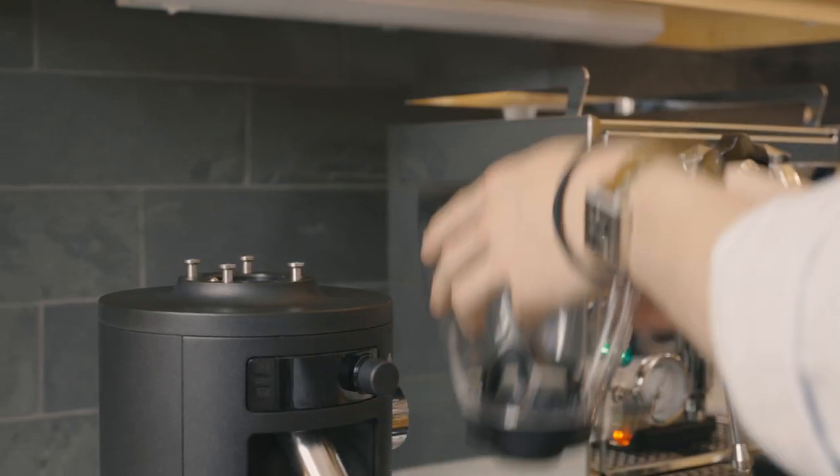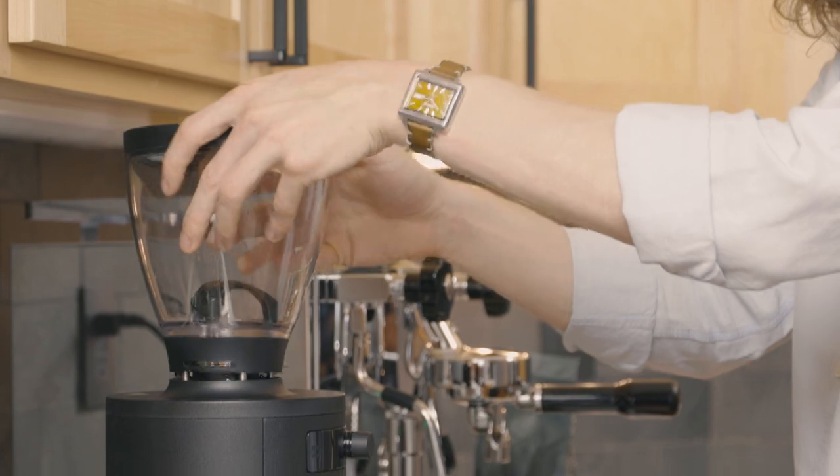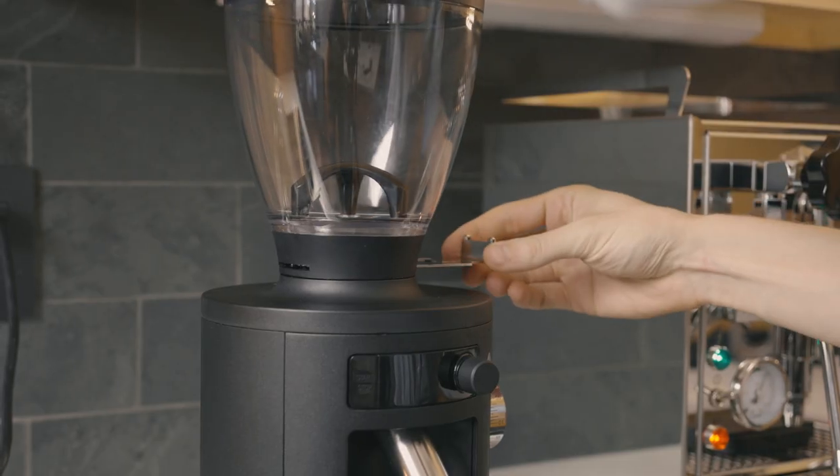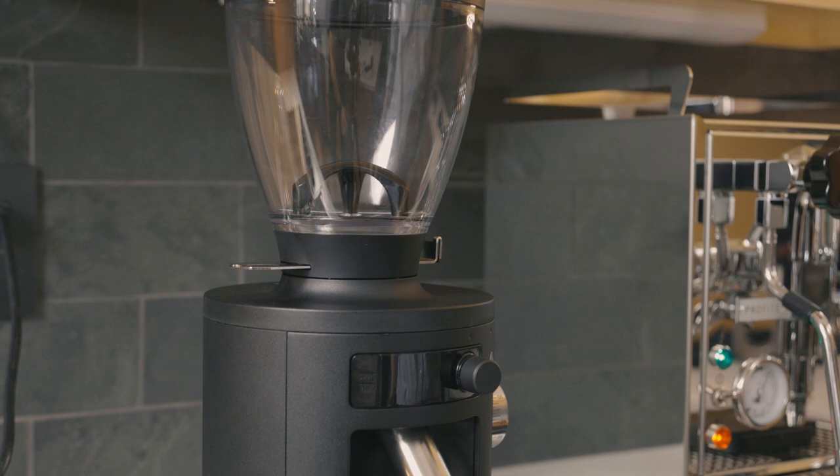To get things started, place the hopper on top of the grinder with the tab on the right. Push down on the hopper lid while sliding the tab to the left to lock it in place.